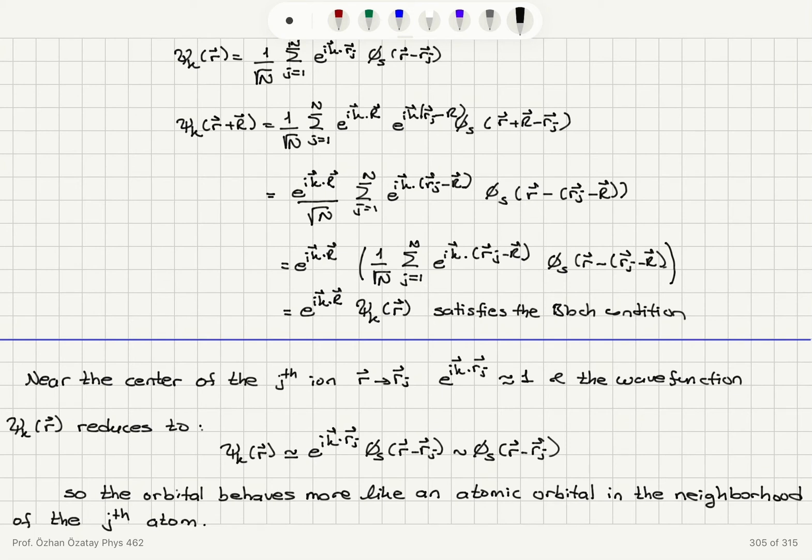So this is going to be phi s of r minus rj so the wave function basically will behave like the orbital itself because the other contributions are negligible so the wave function basically blows up in this neighborhood and we're going to obtain the wave function that is almost the s orbital